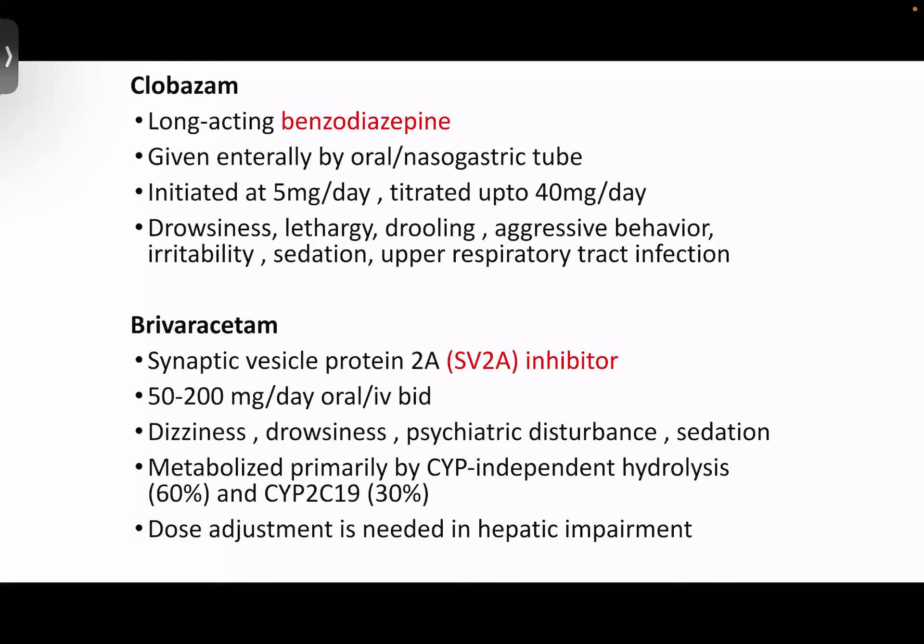Other drugs which can be used as add-on agents include clobazam, which is a long-acting benzodiazepine that can be given orally or through nasogastric tube, initiated at 5 mg per day and titrated up to a maximum of 40 mg per day; side effects include drowsiness, lethargy, drooling, aggressive behavior, irritability, sedation, and respiratory infection. Brivaracetam is a synaptic vesicle protein 2A inhibitor that can be given at 50 to 200 mg per day oral or IV; side effects include drowsiness, dizziness, psychiatric disturbances, and sedation.